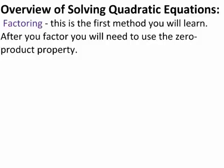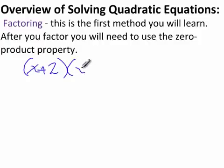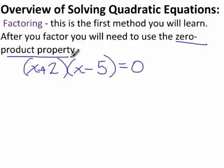There are several ways to solve these quadratic equations. The first method that you learn is by factoring. What you'll do is get everything on one side, and then factor the problem. For example, I would get something such as x plus 2 times x minus 5 equals zero.